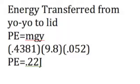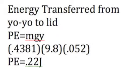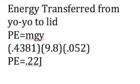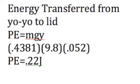Lastly, to get the energy transferred from the yo-yo to the lid, we can use the potential energy gravitational equation PE = mgy, which is the potential energy equals the mass times gravity times the distance traveled. I got that the potential energy equaled 0.4381 meters traveled times 9.8 acceleration times 0.052 kilograms, which was the weight of the yo-yo, and my final result was the potential energy equaled 0.22 joules.